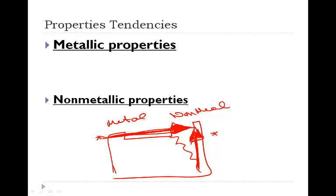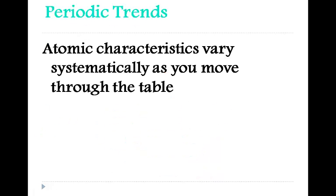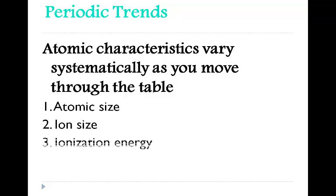These properties are based on the ability for metals to lose electrons and non-metals to gain electrons. The characteristics of atoms are going to vary systematically — meaning predictably — as we move throughout the table. We're going to be able to predict things about atomic size, ion size, ionization energy, and electron affinity.